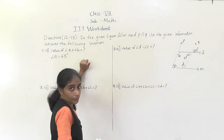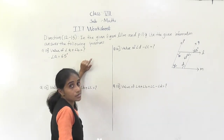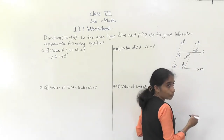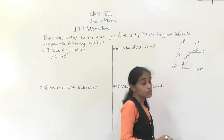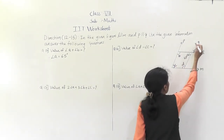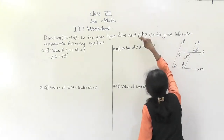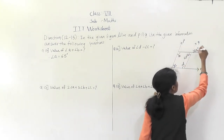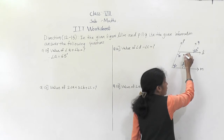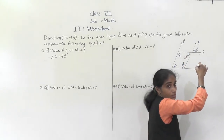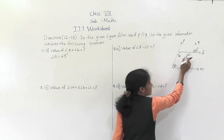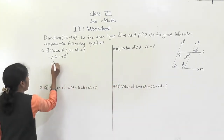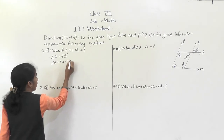Now we have to find angle A plus angle B, so we need to find angle B. These two lines are parallel, these are also parallel, and this is the transversal. Interior angles made by the same side of the transversal are supplementary. So angle A plus angle B is equal to 180 degrees.